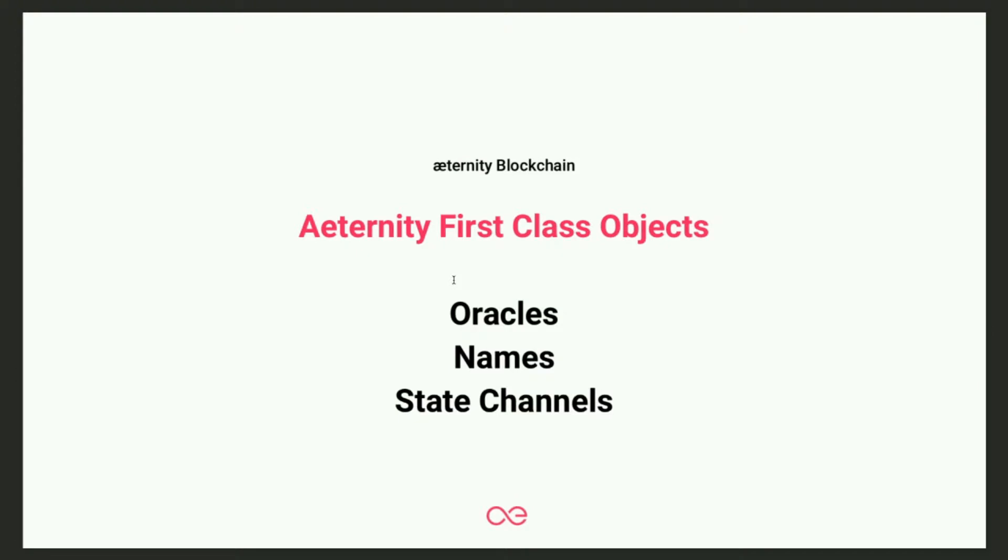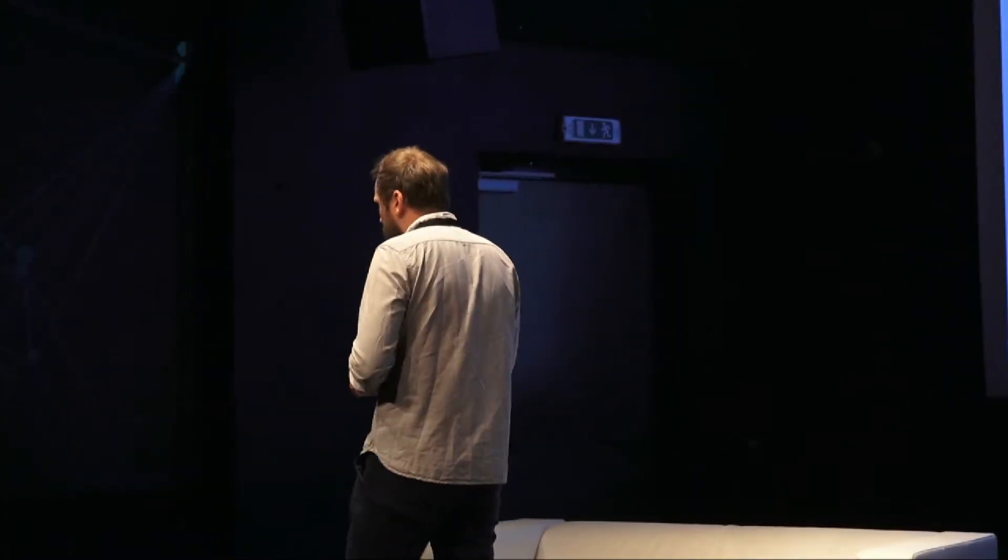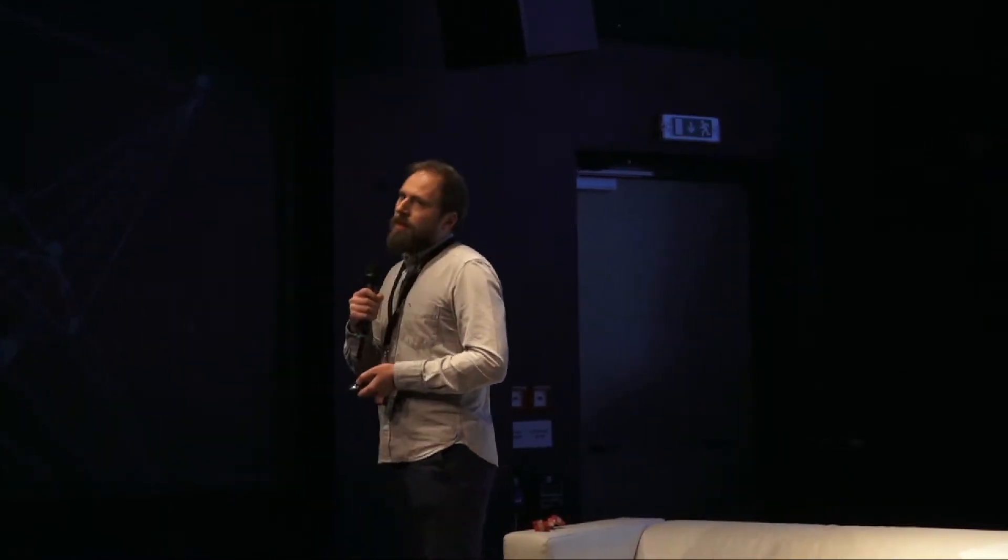Through the smart contract language you can already access oracles that help you deal with real-world data. We have a naming system to make applications much more user-friendly, and we have state channels — a very interesting technology that helps you do a lot of transactions off-chain. How this works is that you can imagine using the blockchain more as a court in case of a dispute between participants, instead of putting every transaction there.